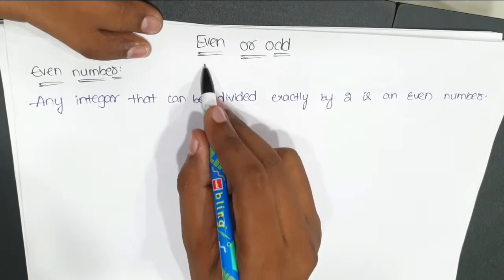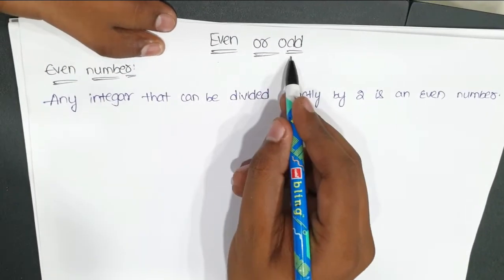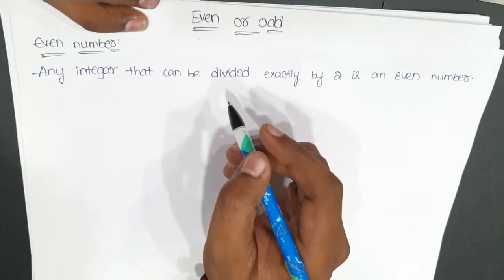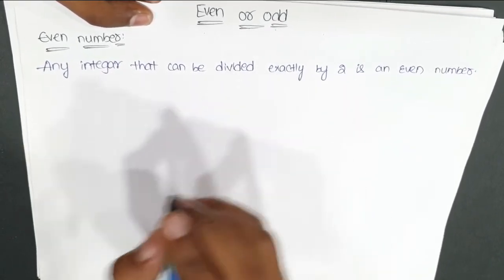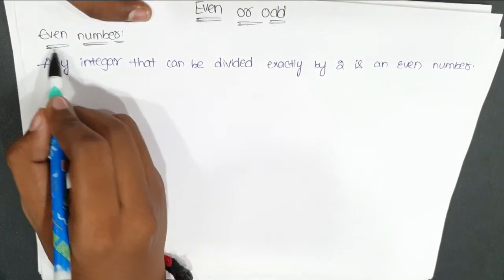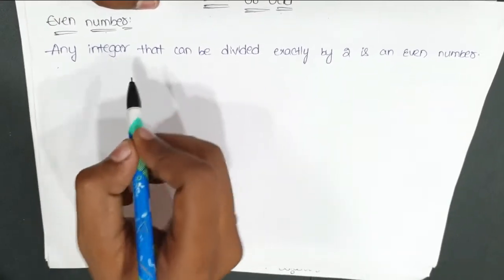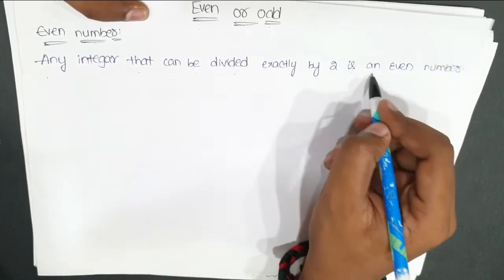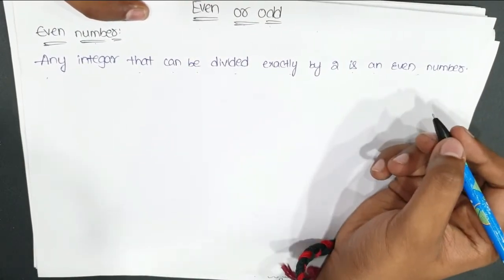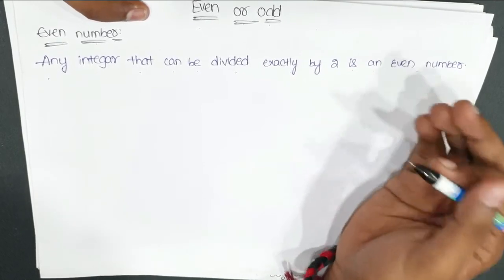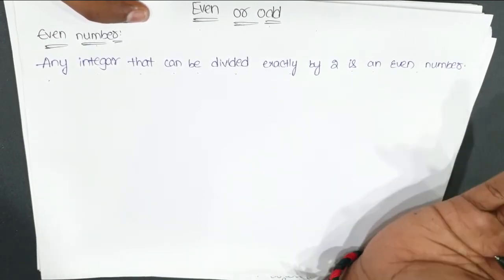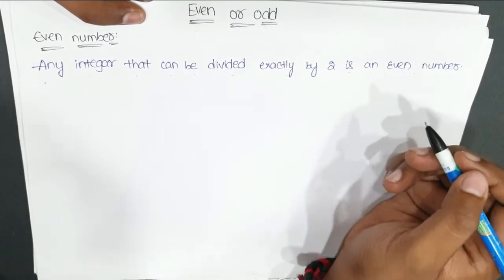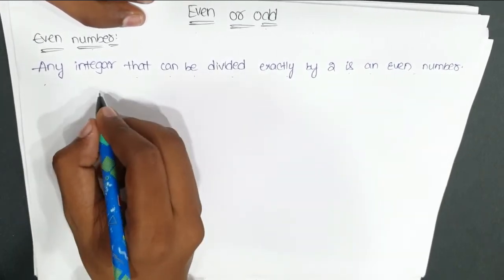How to get even or odd of a number. Before we go into that, we should know what is meant by an even number. Any integer that can be divided exactly by 2 is an even number. That is, when we divide a number by 2, if the remainder is 0, then it is an even number; else it is an odd number.